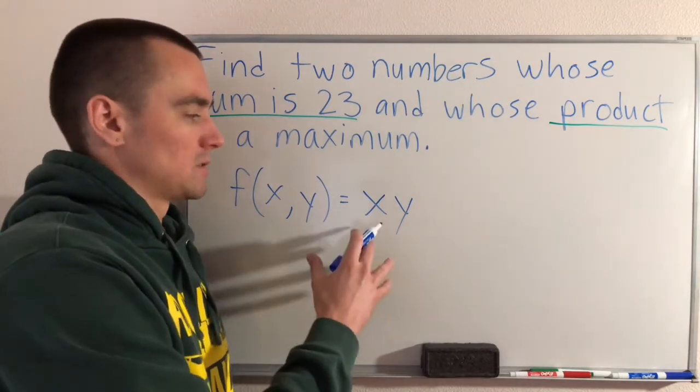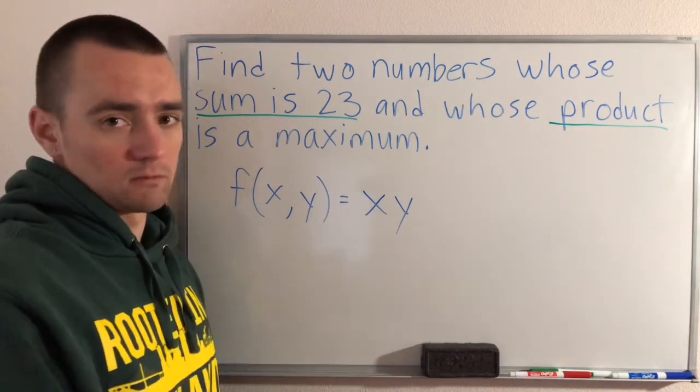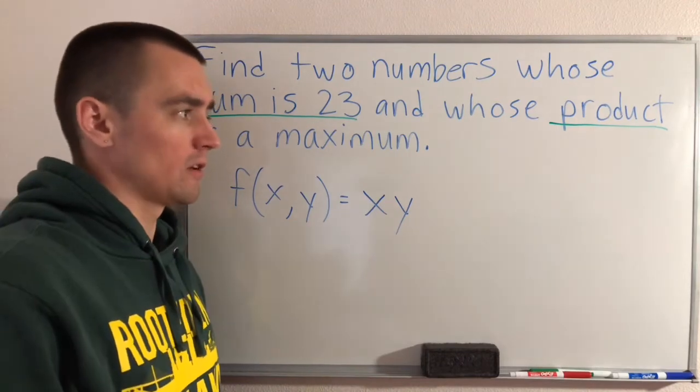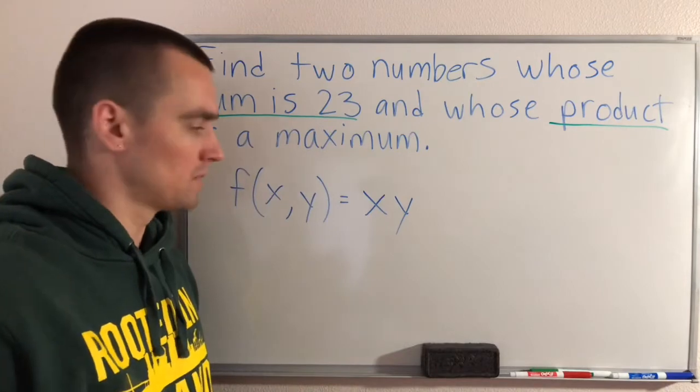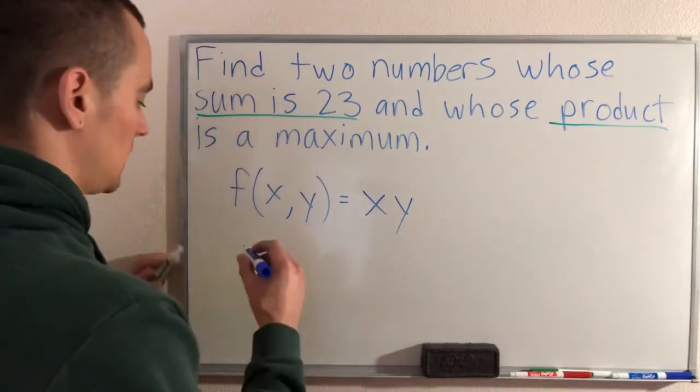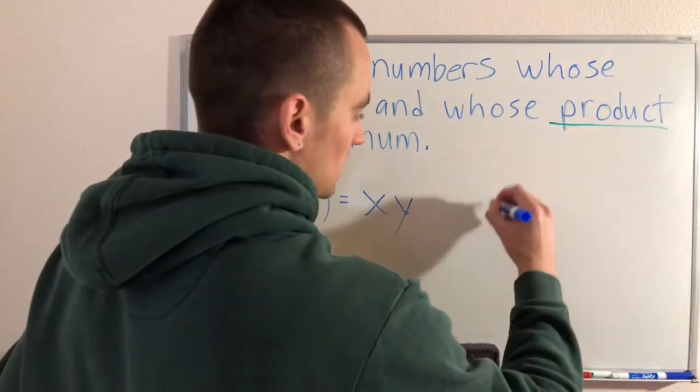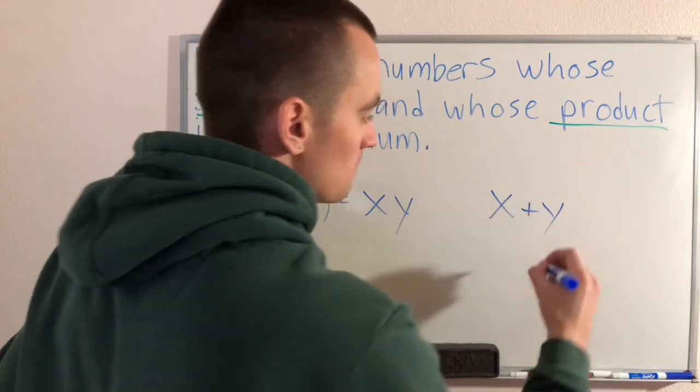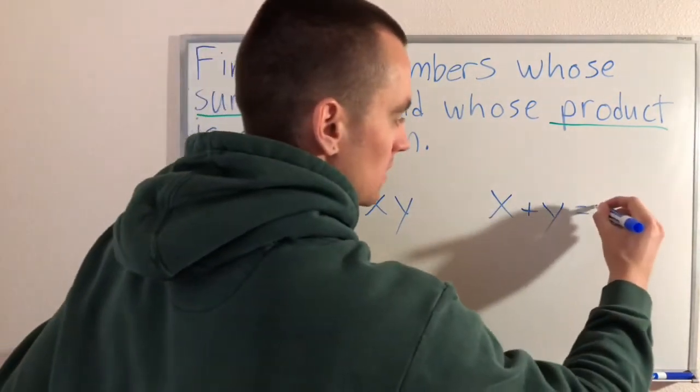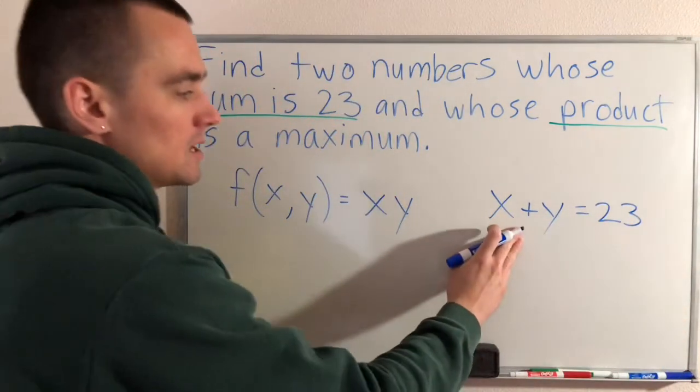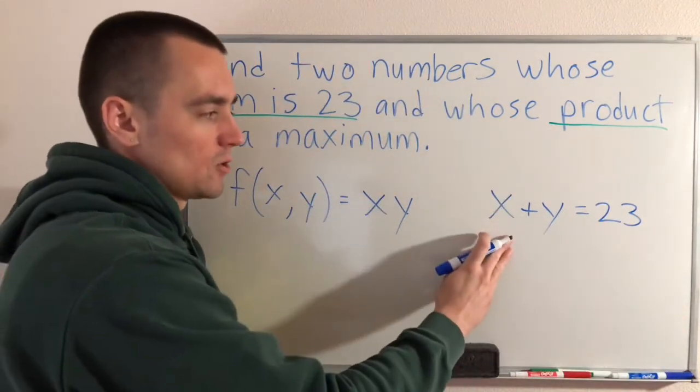So this is how you would write the product of our two numbers that we'll call X and Y, and this is the function that we want to maximize or find the global maximum of. Now the other piece that we want to take into account is the fact that these two numbers have a sum of 23. So what that means is if we take our two numbers X and Y and we get their sum, which is just the two numbers being added together, those should add up to 23.